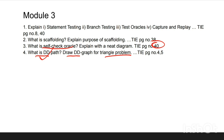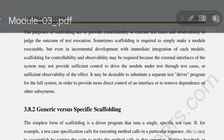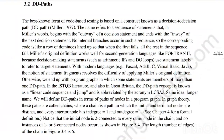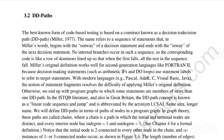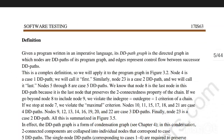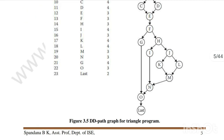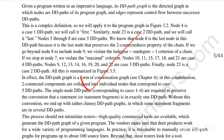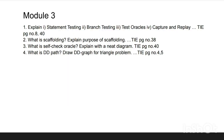The fourth Module 3 question is: explain DD path and draw the DD graph for the triangle problem. Be careful as there are many similar topics. The DD path definition is at page number 4 and the DD path for the triangle problem is at page number 5 — go through those, write the answer, and draw the graph. For Module 3, make sure to study test oracles, capture and replay, scaffolding, and DD path.